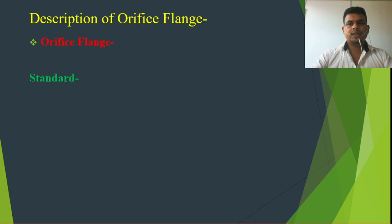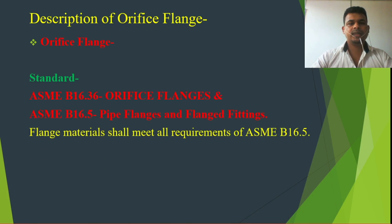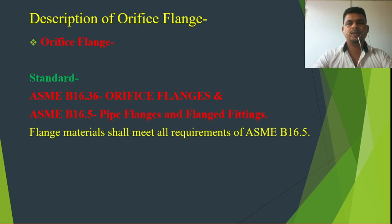Regarding standards: ASME B16.36 is used purely for the orifice flange, and we also need to use ASME B16.5 for pipe flanges and flange fittings. Flange material shall meet all requirements of ASME B16.5. Flange rating and flange thickness follow ASME B16.5, while for the tap holes, jack screws, and orifice plate provisions, we follow ASME B16.36.